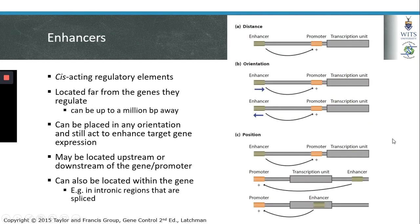This brings us to the concept of the enhancer. An enhancer is also a cis-acting regulatory element. Enhancers are located at a distance from the genes that they regulate — they can be up to a million base pairs away. Enhancers can be placed in any orientation and still act to enhance the expression of target genes. They can be located either upstream or downstream of the gene promoters they regulate, and may also be located within the intronic regions of genes, which can later be spliced out.